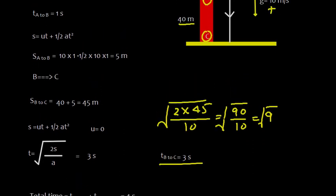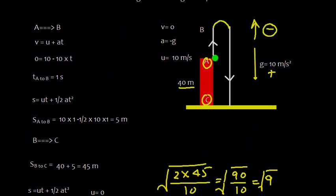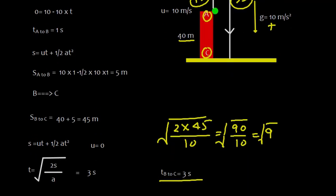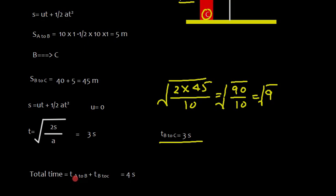So what is the total time? Total time is 1 second from A to B plus 3 seconds from B to C, which equals 4 seconds. That's the answer.